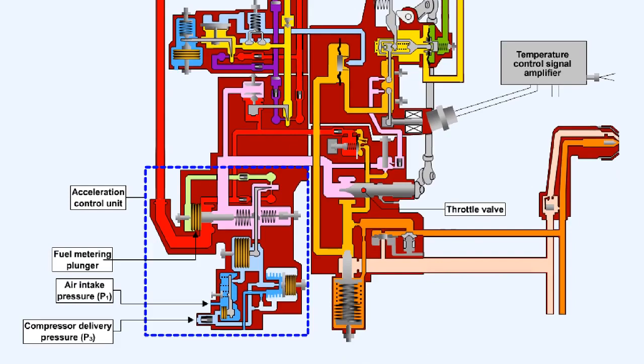It's necessary to increase the fuel flow to the engine to make it accelerate. However, too rapid an increase of fuel flow into the engine can cause compressor stall and surge. To regulate the fuel flow under conditions of engine acceleration, an acceleration control unit is fitted within the fuel control unit.